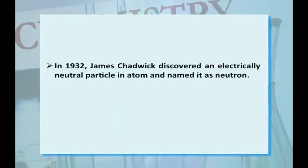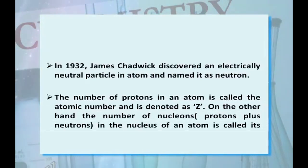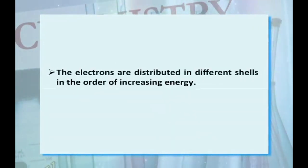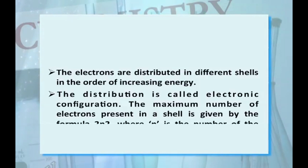In 1932, James Chadwick discovered the electrically neutral particle in atom and named it as neutron. The number of protons in atom is called the atomic number and it is denoted as capital Z. On the other hand, the number of nucleons, that is protons plus neutrons, in the nucleus of an atom is called its mass number and it is denoted by symbol capital A. The electrons are distributed in different shells in order of increasing energy, that were the Bohr's postulate. The distribution is called electronic configuration. The maximum number of electrons present in a shell is given by the formula 2n² where n is the number of the orbit or the shell.